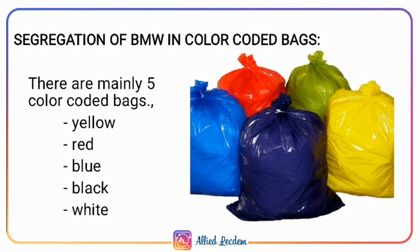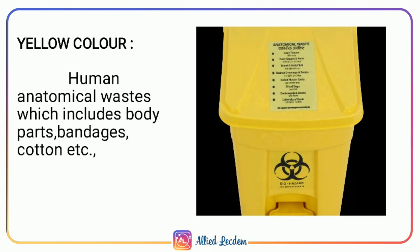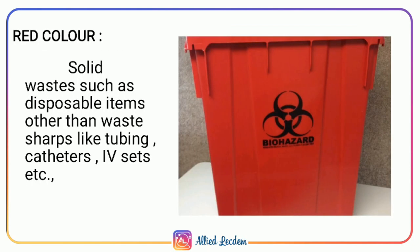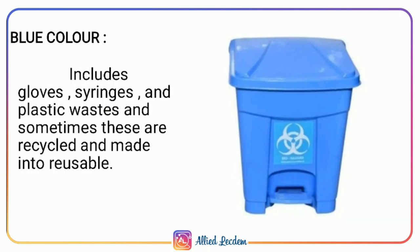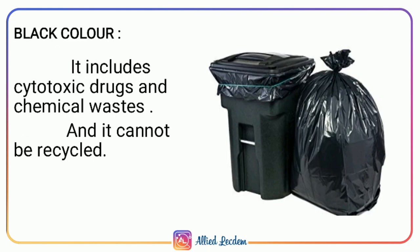Segregation of Biomedical Waste in Color-Coded Bags. There are 5 color-coded bags routinely used: yellow, red, blue, black, and white. The yellow color bin is used for discarding human anatomical waste which includes body parts and also bandages, cotton, etc. The red color bin includes solid waste such as disposable items other than sharps, like tubing, catheters, IV sets, etc. The blue color bin includes gloves, syringes, and plastic waste that are sometimes recycled and made into reusable items.